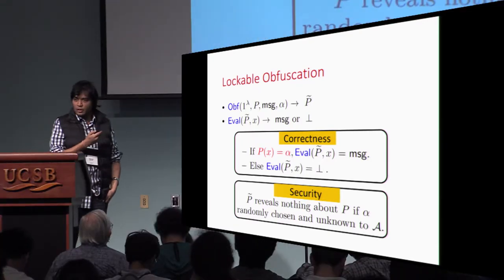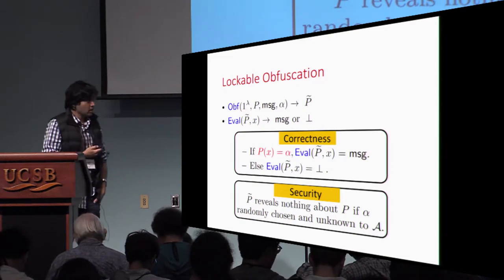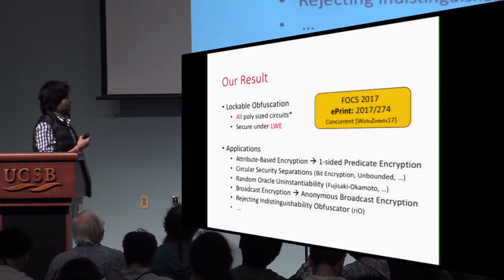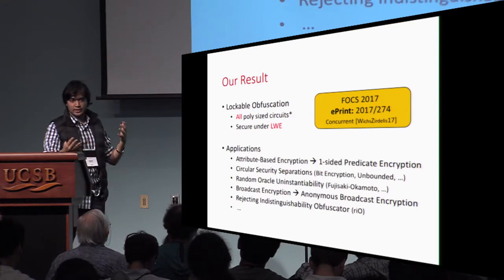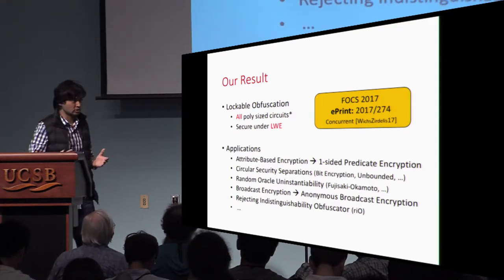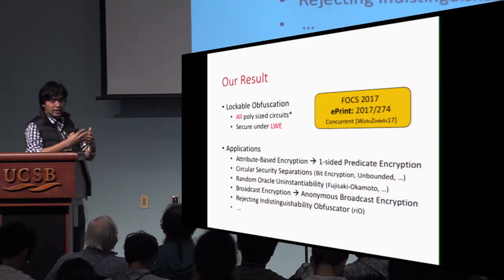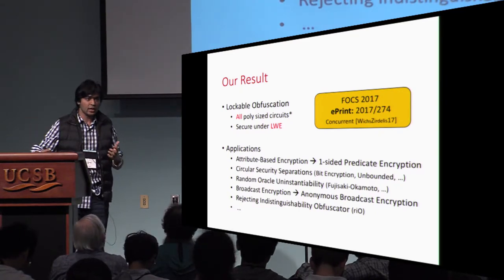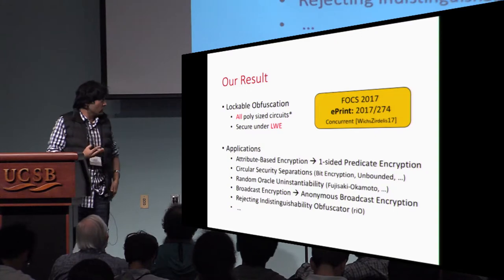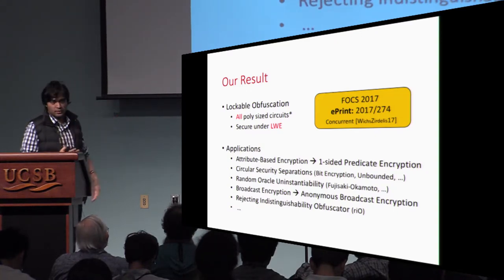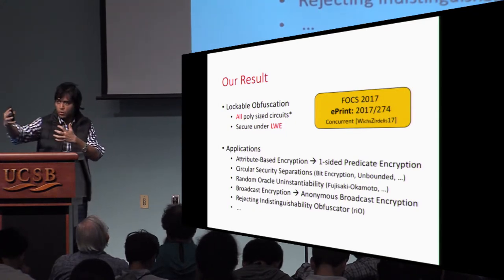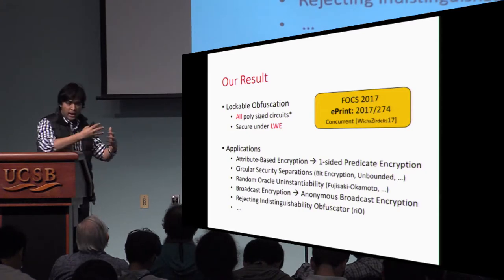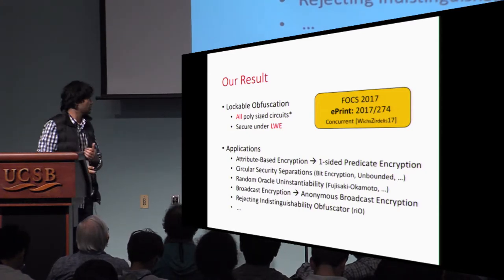In a work that will appear at Eurocrypt, we show that we can construct lockable obfuscation scheme for all poly-sized circuits from the standard LWE assumption. And it turns out that it leads to a wide variety of applications which we didn't know how to construct. We only knew constructions of all these primitives or applications from indistinguishable obfuscation. So we were able to show how we can move some applications of I.O. to standard assumptions by using this primitive of lockable obfuscation.